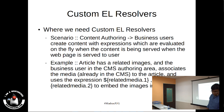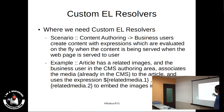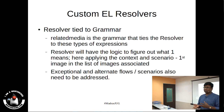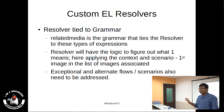We built this for one of our clients. The article has related images as a collection, and the business user in the CMS authoring area associates the media already in the CMS to the article, then uses the expression related-media dot one or related-media dot two to embed the images. A resolver is tied to a grammar — the grammar here is related-media. For implicit objects we do not need any additional effort, but when you come with your own expression you should provide the context, the logic, and the code to process those expressions.